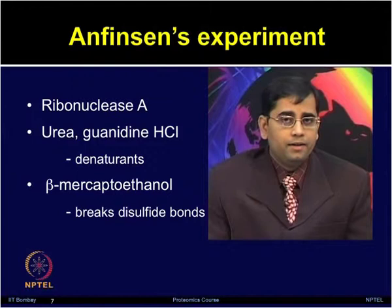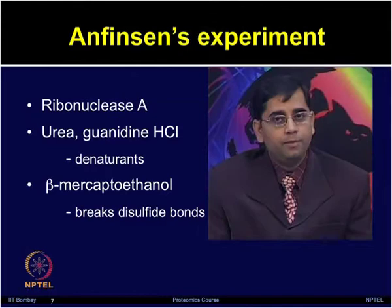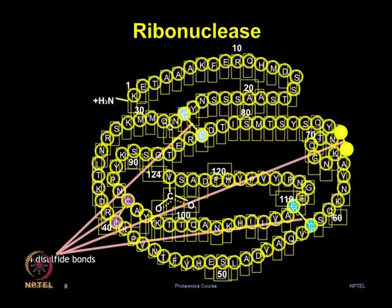Denaturants such as urea or guanidine hydrochloride, and beta-mercaptoethanol which breaks disulfide bonds, were used. Ribonuclease A has contributed greatly to our understanding of protein folding in vitro from the landmark experiment of Anfinsen. As you can see in the structure, ribonuclease has 124 amino acid residues and forms 4 disulfide bridges, which are located between the cysteine residues at positions 26 and 84, 40 and 95, 58 and 110, and 65 and 72.